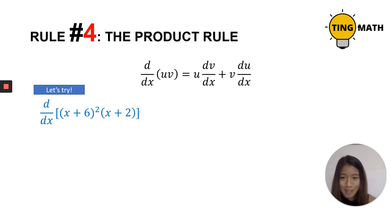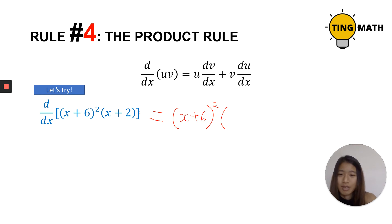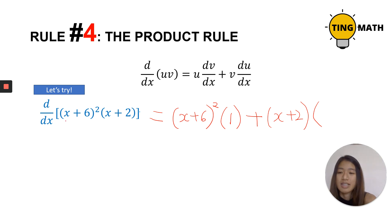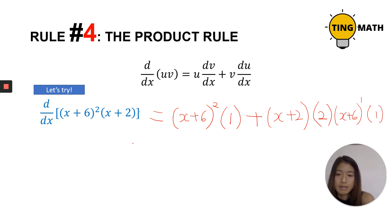Let's try one more product rule example: (x plus x squared) multiplied by (x plus 2). Leave the first part alone and differentiate (x plus 2), which gives 1. Then for the second term, copy (x plus 2) normally and differentiate (x plus x squared). Wait — looking at this, (x plus 6) squared uses the chain rule: bring down the 2, keep the bracket to the power of 1, and differentiate the inside (x plus 6), which gives 1. So the derivative is 2(x plus 6) times 1.